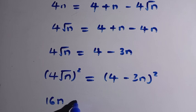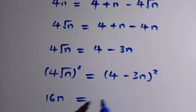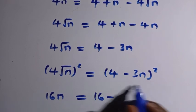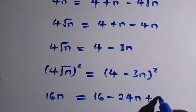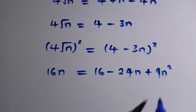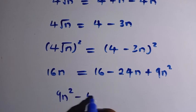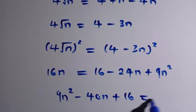Now squaring both sides again, (4√n)² gives 16n. On the right side, (4 minus 3n)² expands as: 4² minus 2 times 4 times 3n plus (3n)², giving 16 minus 24n plus 9n². Rearranging everything, we get the quadratic equation: 9n² minus 40n + 16 equals 0.